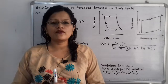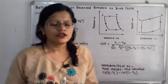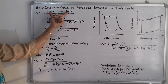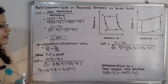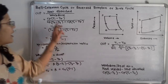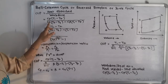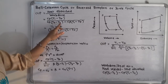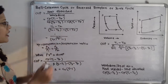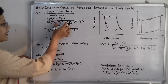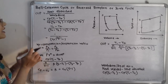Now we move to the coefficient of performance (COP). COP equals heat absorbed divided by work done. So COP = Cp(T1 − T4) divided by [Cp(T2 − T3) − Cp(T1 − T4)].